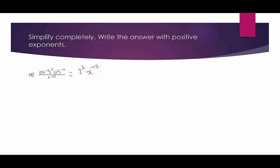The second expression, x squared to the negative 4th — we will use the power to a power rule to multiply the exponents and get x to the negative 8. In the denominator, there's no simplifying to be done, so we're just going to rewrite it.